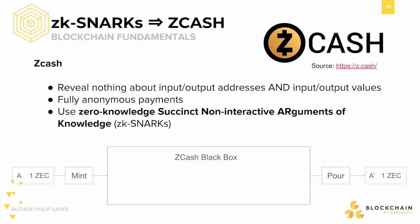Zcash is an altcoin where transactions reveal nothing about input and output addresses and also the input and output values of the transactions, allowing for fully anonymous payments. The way it does this is by using zero-knowledge succinct non-interactive arguments of knowledge, or ZK-SNARKs. We talked about this briefly in the last lecture on scalability, but in a nutshell, ZK-SNARKs are a way of proving that you know something without revealing what you actually know.